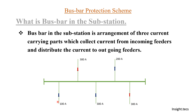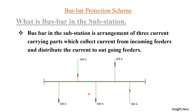So the bus bar protection scheme basically continuously senses the difference of incoming and outgoing current. If the difference is zero, the bus bar is safe and no protection operation is required. If there is some difference between incoming and outgoing current, that means there is some fault that has occurred on the bus bar, and in that case the bus bar relay protection scheme will come into picture.